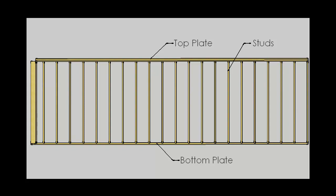What do we mean when we say 2x4? We're referring to the dimensional thickness and width of the framing member. In this case, the thickness of the member would be 2 inches and the width would be 4 inches.